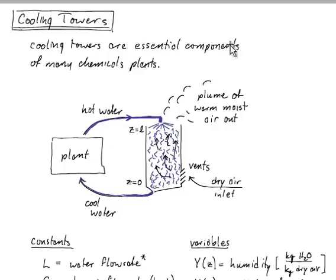This lesson is about cooling towers, which are an essential component of many chemical plants. Lots of processes need inlet streams of cool water for temperature control. This is something you will probably encounter if you go into industry and do any design work.